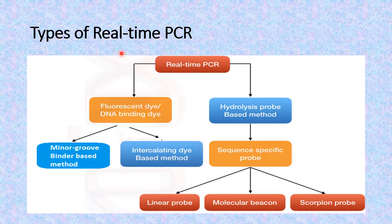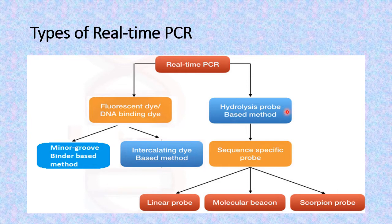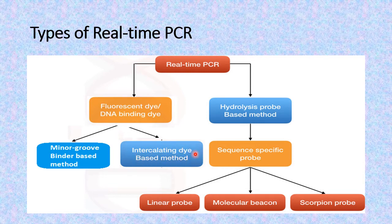The real-time qPCR is of different types based on how we provide fluorescence to the system. One method is by using some DNA binding dye that fluoresces, and the other is by using a probe whose hydrolysis yields fluorescence in the system. When we say the DNA binding dye, it may bind to different parts of the DNA molecule — either the major groove or the minor groove within the DNA double helix. Basically, these DNA binding dyes either bind at the minor groove or they are intercalating dye-based methods.